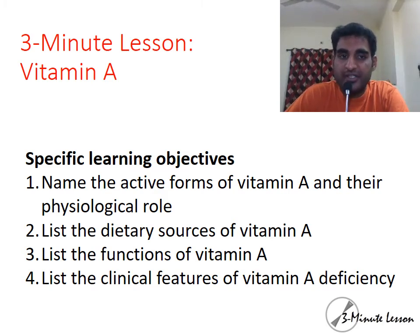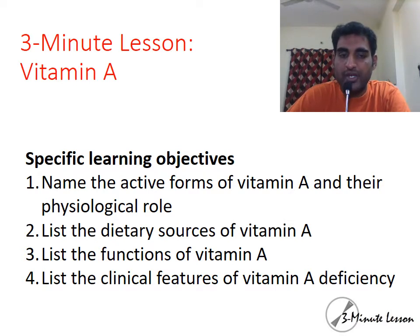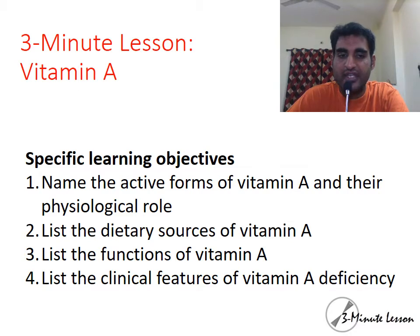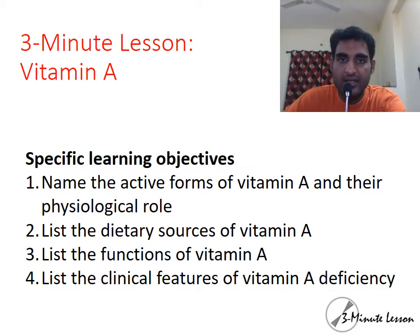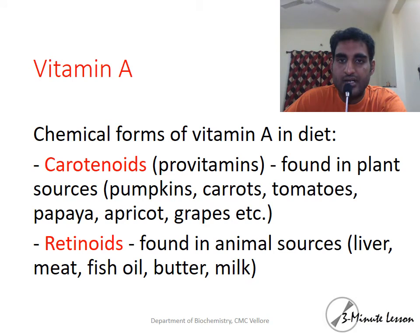Hi, welcome to the 3-minute lesson on Vitamin A. At the end you should be able to name the active forms of Vitamin A and their physiological control, list its dietary sources and functions, and list the clinical features of Vitamin A deficiency. There are two major chemical forms of Vitamin A in the diet: carotenoids and retinoids.